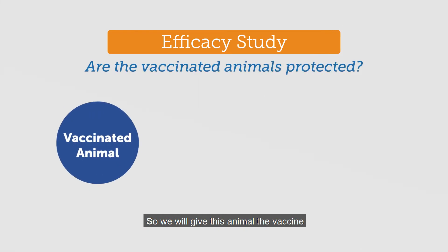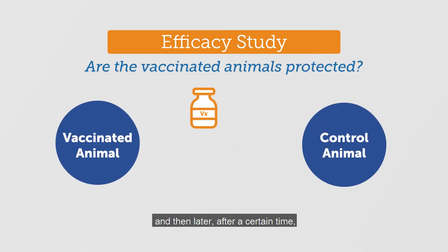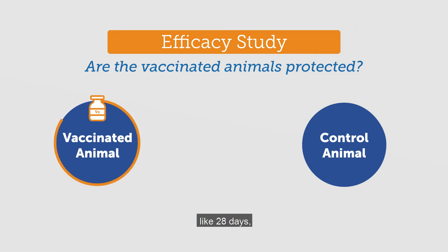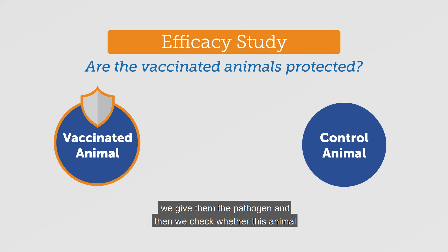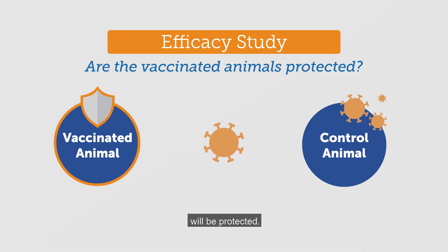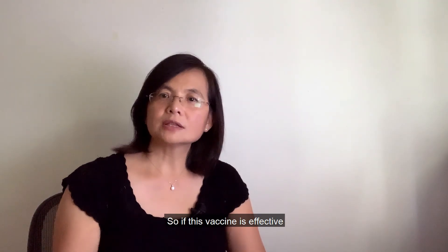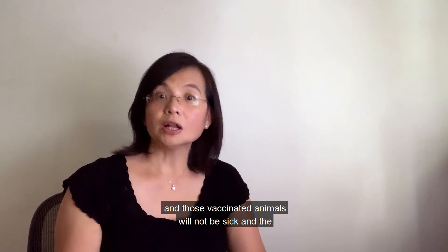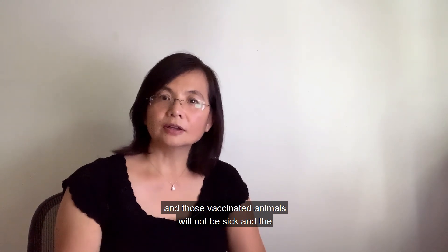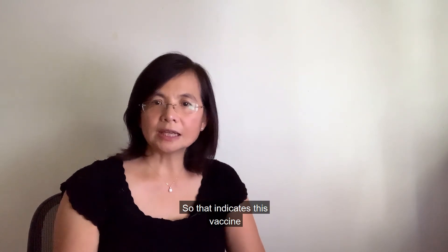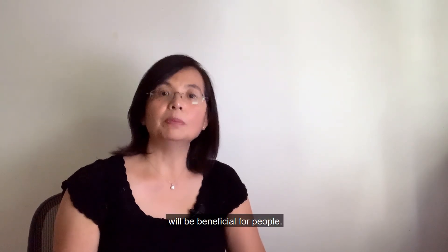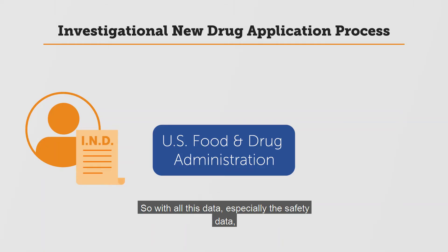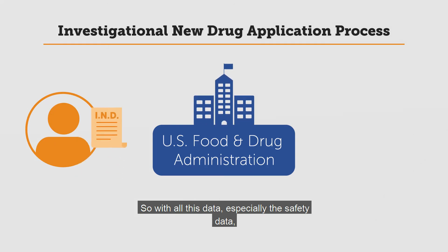Scientists give the animal the vaccine, and then after a certain time — like 28 days — they give them the pathogen and check whether the animal is protected. If the vaccine is effective, the vaccinated animals will not get sick while the control animals will get sick. This indicates the vaccine would be beneficial for people.